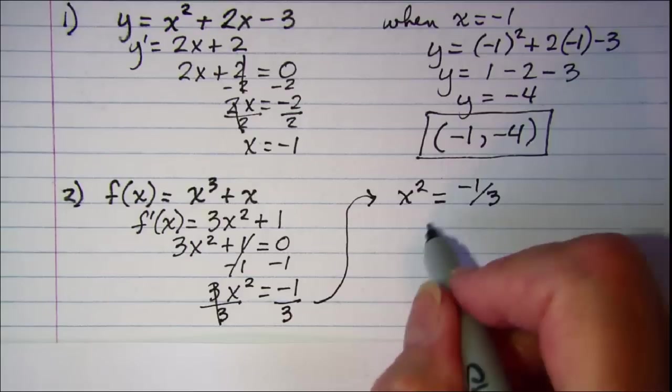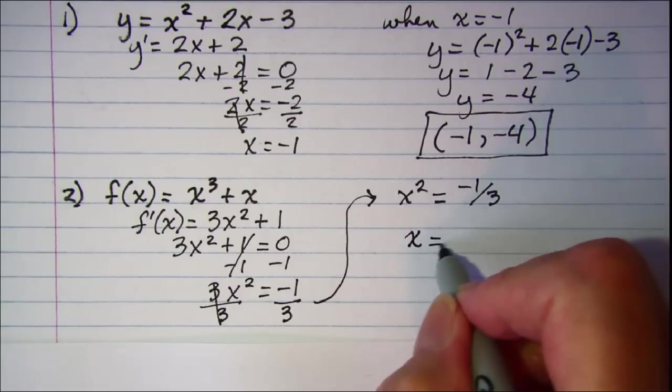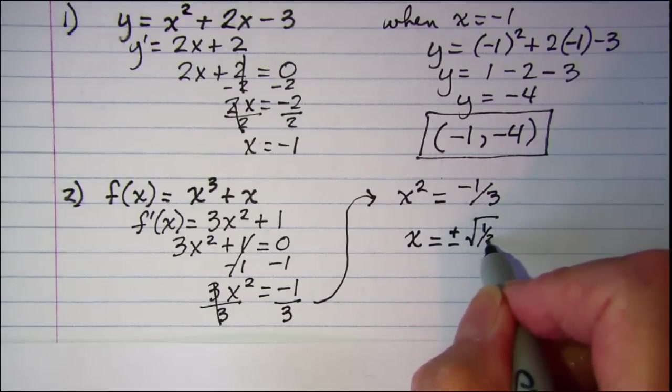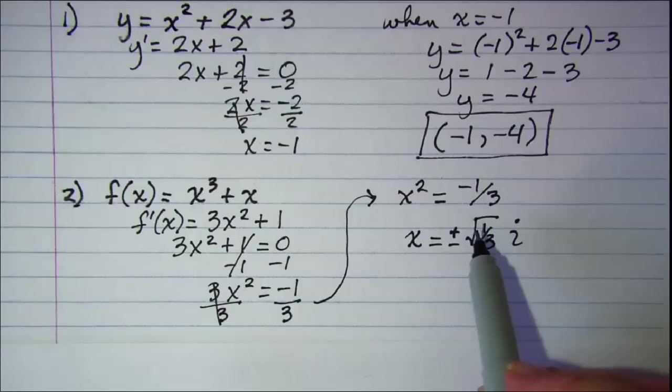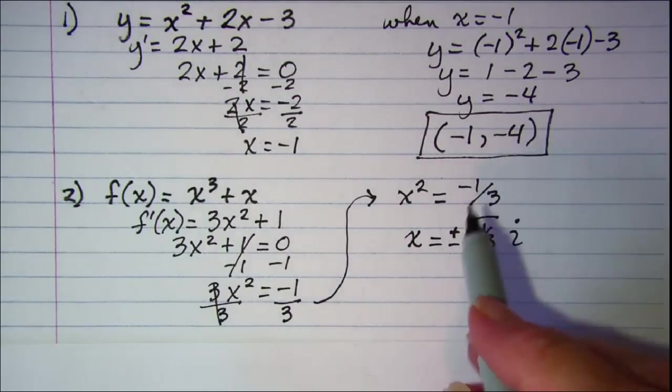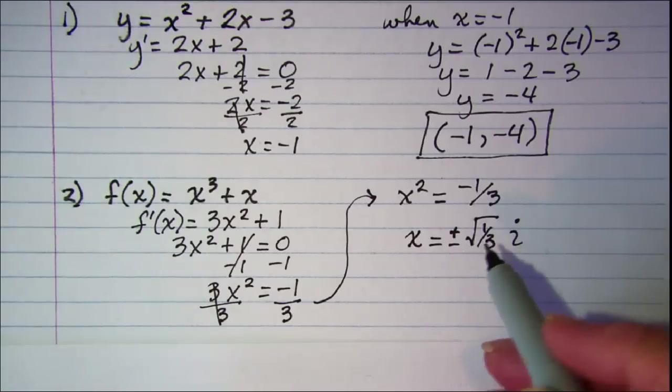So when we square root both sides, we're getting an imaginary number. Since our function is graphed on the real coordinate plane, this means that there are no horizontal tangent lines.